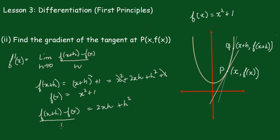Now we'll divide by h. The h's cancel and we get 2x + h.